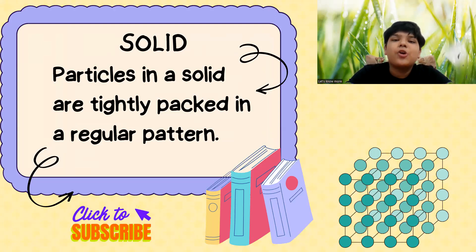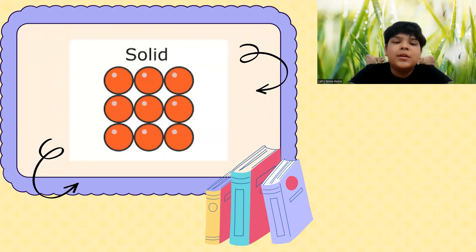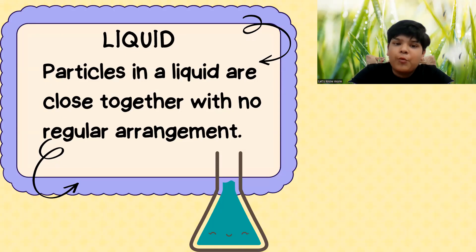Particles in a solid are very tightly packed in a regular pattern. Solids are defined by the following characteristics: definite shape and definite volume. This is the arrangement of molecules in a solid object.